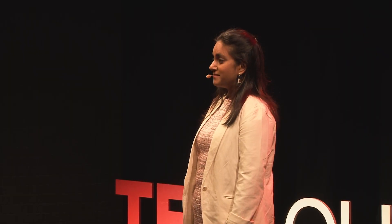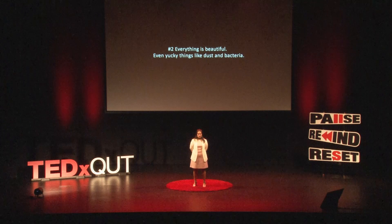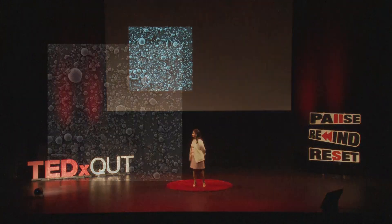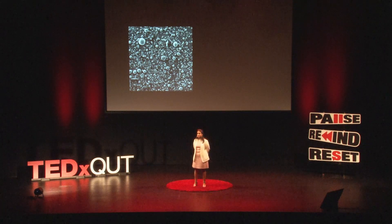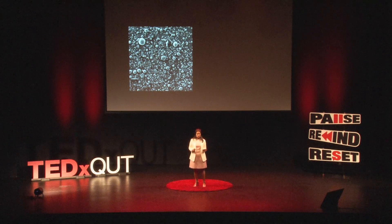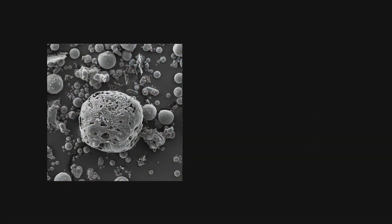Now comes my second law: everything is beautiful — even disgusting and yucky things like dust and bacteria. Because that is what dust looks like under the microscope. But it's not ordinary dust — it's a material called fly ash, which is often used in engineering applications. And maybe it doesn't look very beautiful to you, but let me zoom in. Now, and now, and now.